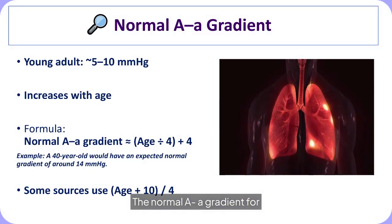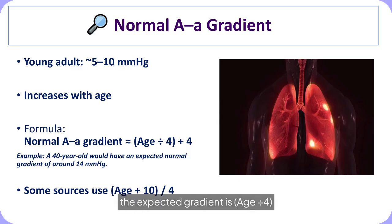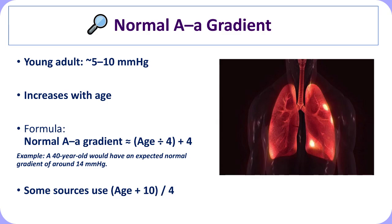The normal AA gradient for a young, healthy adult is approximately 5 to 10 mmHg, and it gradually increases with age due to subtle declines in pulmonary elastic recoil and ventilation-perfusion matching. A practical way to estimate the expected value is by dividing the individual's age by 4 and adding 4 to the result. Some references use an alternate calculation in which the individual's age plus 10 is divided by 4, but both methods provide a reasonable estimate of the normal range for gas transfer efficiency in the lungs.